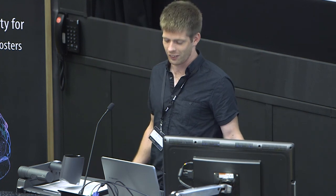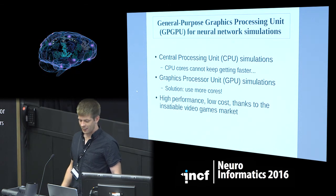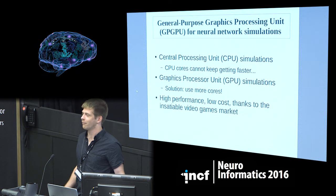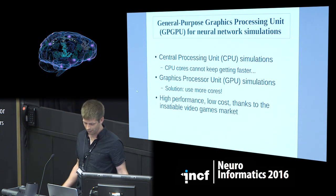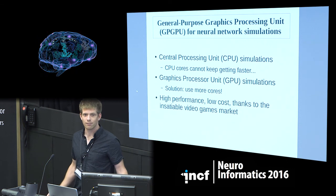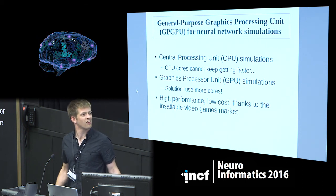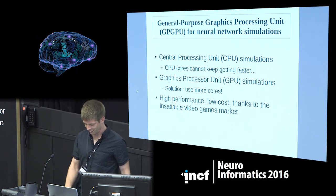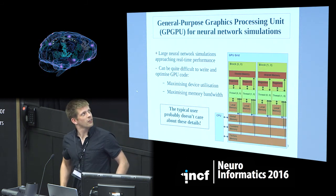First things first — why not single-core CPU neural network simulations? There's only so fast you can make a single processor core. The solution, as we've already heard earlier today, is that a lot of people are adopting graphics processing units because they have a lot more cores than CPUs. Thanks to the video game industry, there's a lot of bang for your buck — it's driven by a very big market — and you get very high performance chips.